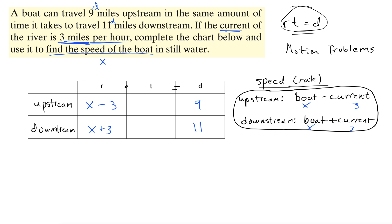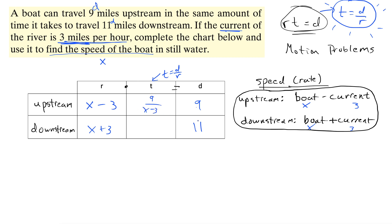Now for the time column — no times are given directly. The trick is to solve rate times time equals distance for time, giving us time equals distance over rate. So upstream, time is 9 over (x minus 3), and downstream, time is 11 over (x plus 3).